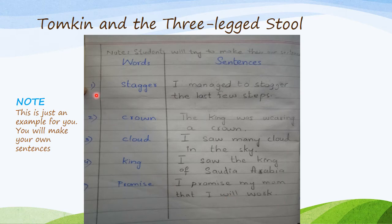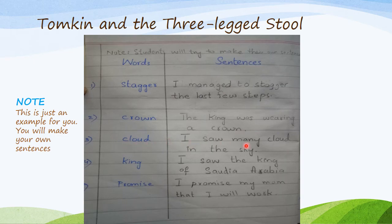Number one: Staggered. I managed to stagger the last few steps. Staggered means to walk unsteadily. Number two: Crown. The king was wearing a crown. Number three: Cloud. I saw many clouds in the sky. Number four: King. I saw the king of Saudi Arabia. Number five: Promise. I promise my mom that I will work hard.